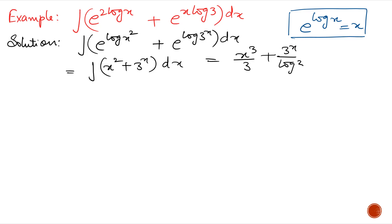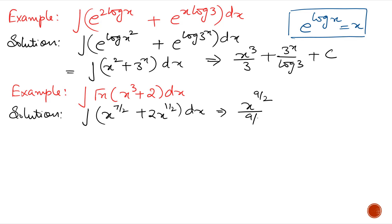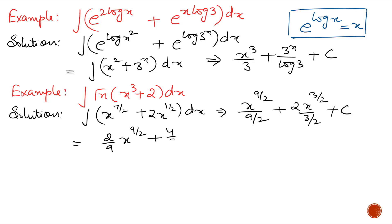Next example: Integrate √x multiplied by (x³ + 2) with respect to x. First simplify. After simplifying we get integration of x^(7/2) + 2·x^(1/2) with respect to x. The answer is x^(9/2) upon 9/2 plus 2·x^(3/2) upon 3/2 plus c, which simplifies to (2/9)x^(9/2) + (4/3)x^(3/2) plus c.